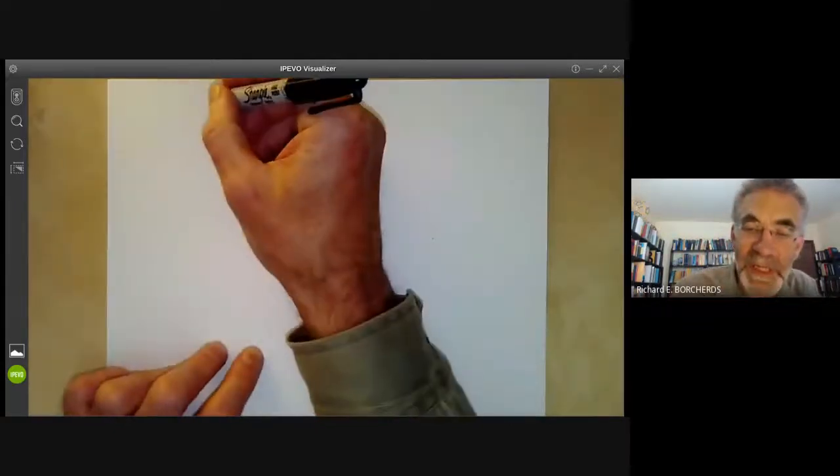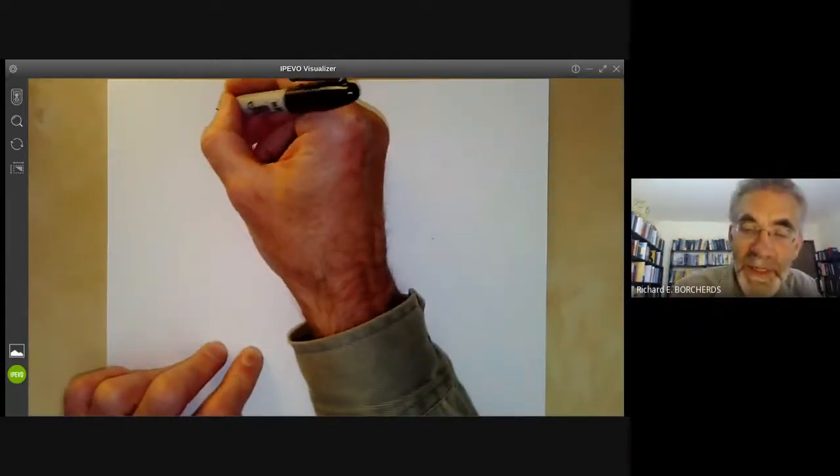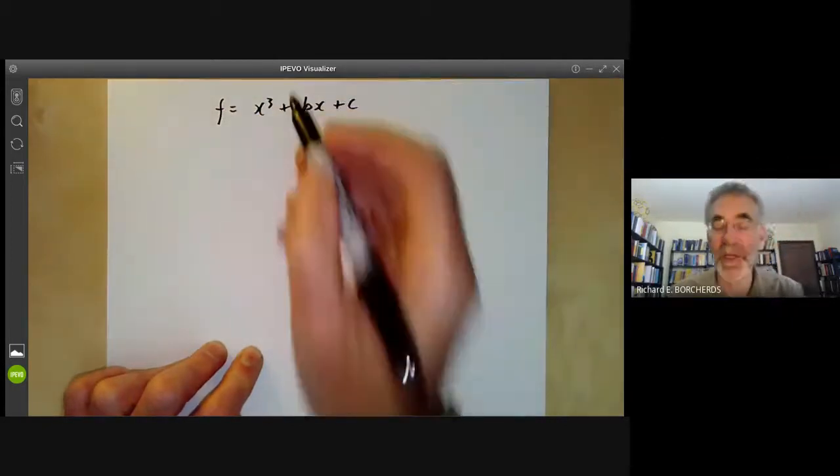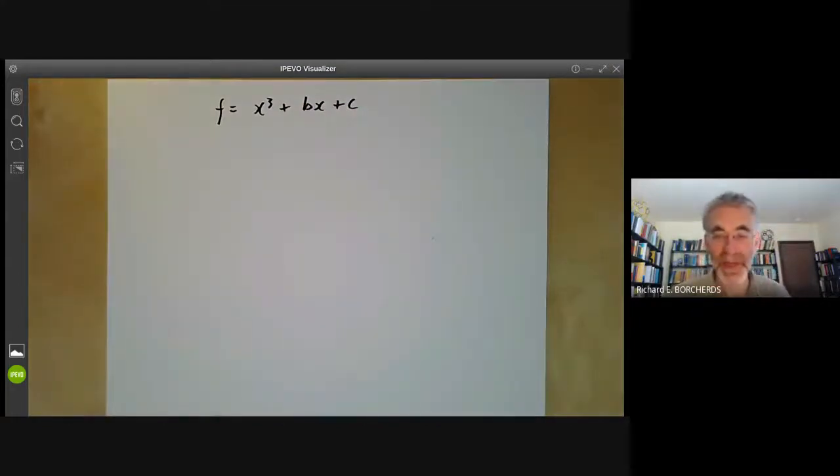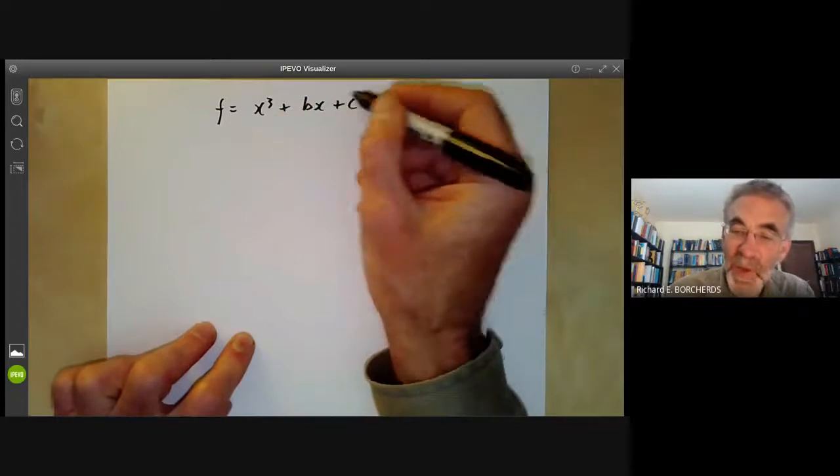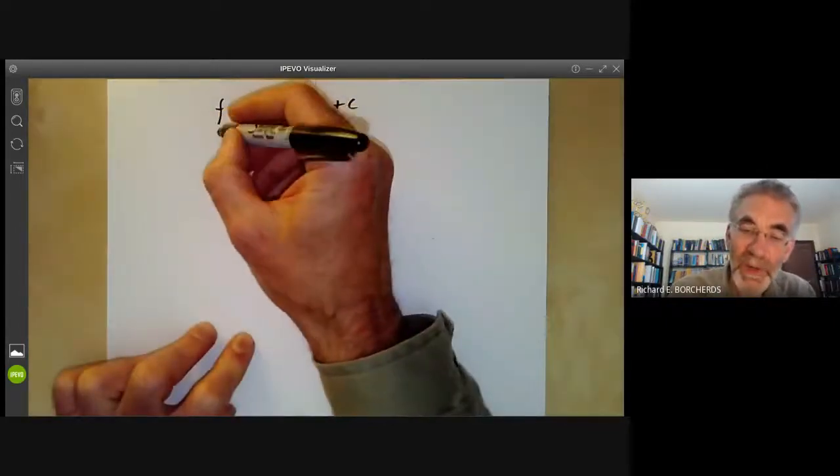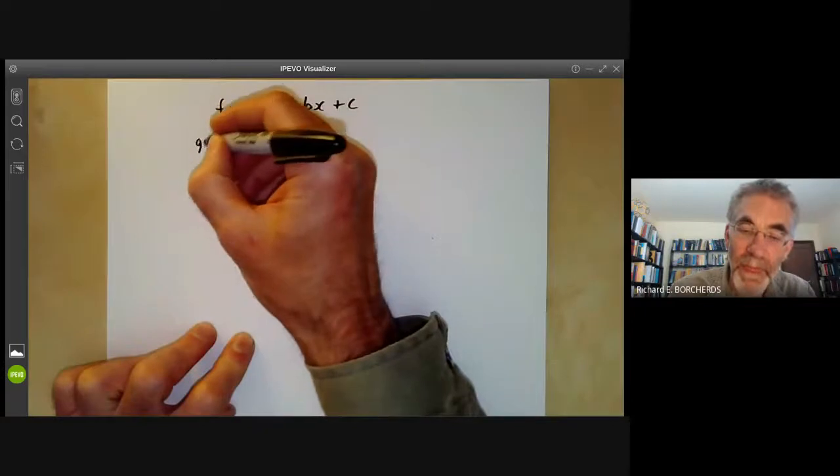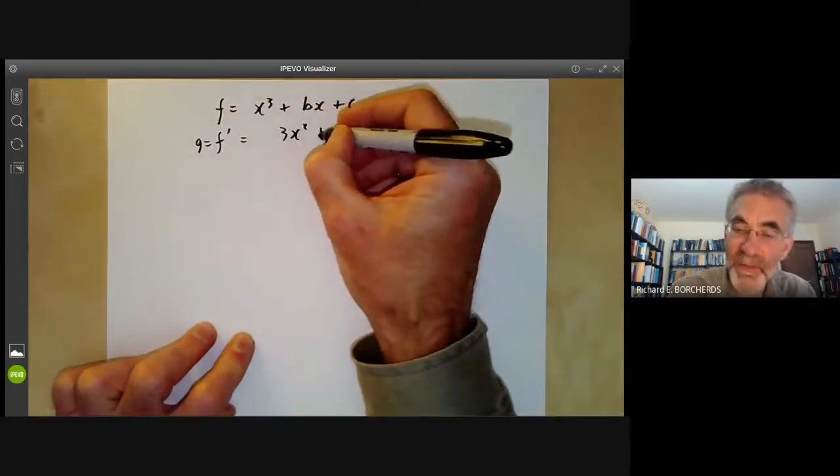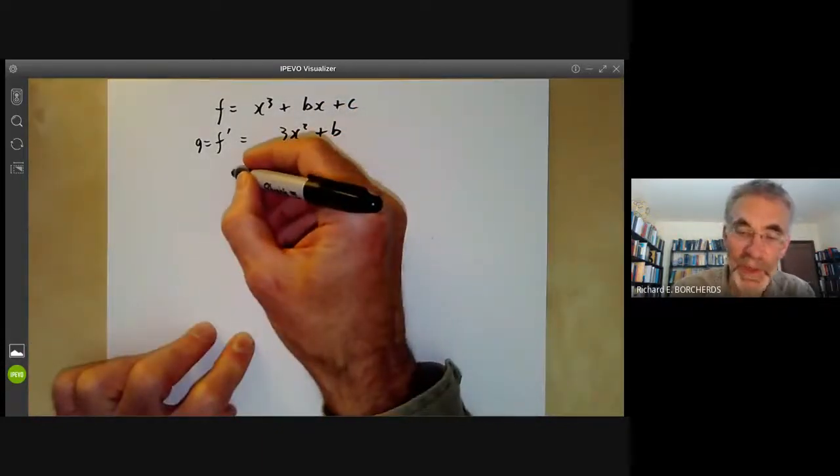So let's have a look at a slightly more complicated example. Suppose f is equal to x cubed plus bx plus c. I'm missing out the term in x squared just to make things easier. And we want to know when does this polynomial have a double root? Well, we look at its derivative, which is 3x squared plus b.